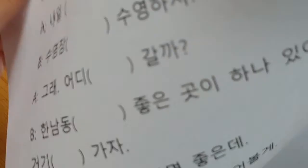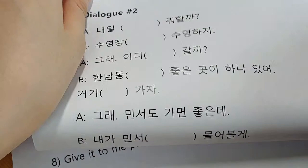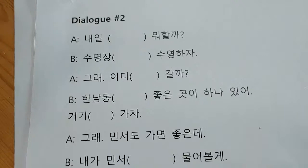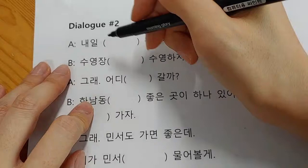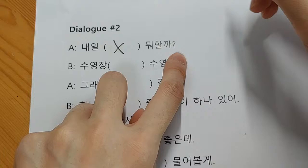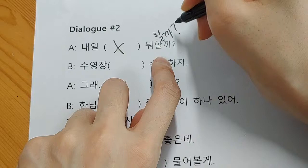Moving on to Dialogue 2 of Quiz 1. It starts with 내일 뭐 할까? — 'What shall we do tomorrow?' 내일 is one of those time nouns that doesn't need a particle. 뭐 할까 is 하다 plus 리을까, the question form — 'what shall we do?' Person B suggests: 수영장에서 수영하자 — 'Let's swim at the swimming pool.' 수영하다 means 'to swim,' and 에서 is correct because swimming is a specific action.